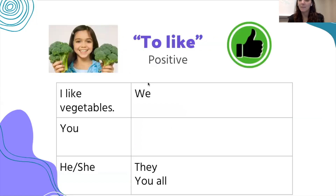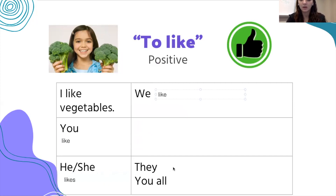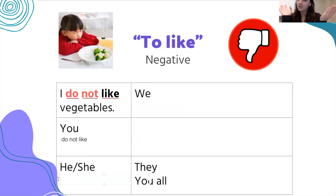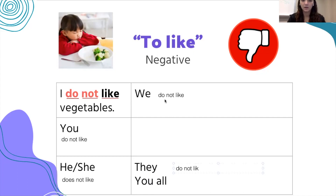So for 'to like,' positive: 'I like vegetables.' We can practice together — 'you like,' 'he or she likes,' 'we like,' 'they / you all like.' This is the positive, normal form. Now negative — we say 'do not like.' All three parts are essential. 'You do not like,' 'he or she does not like,' 'we do not like,' 'they or you all do not like.'